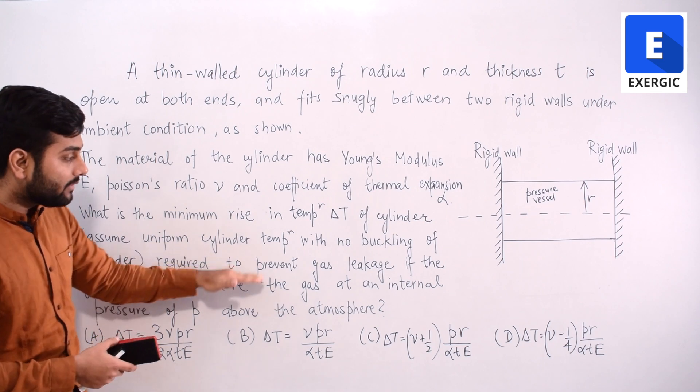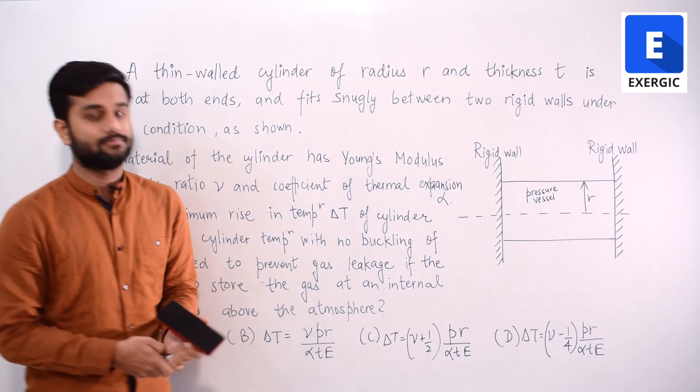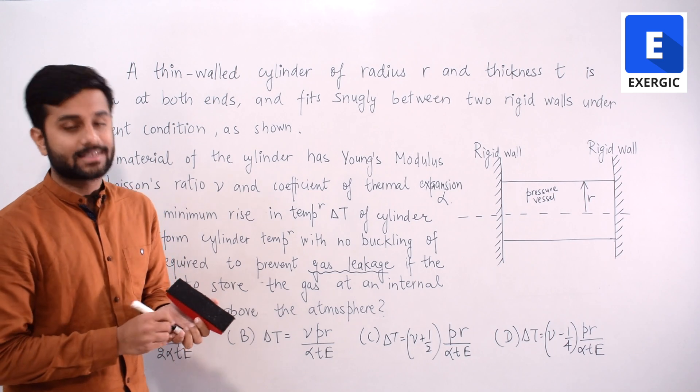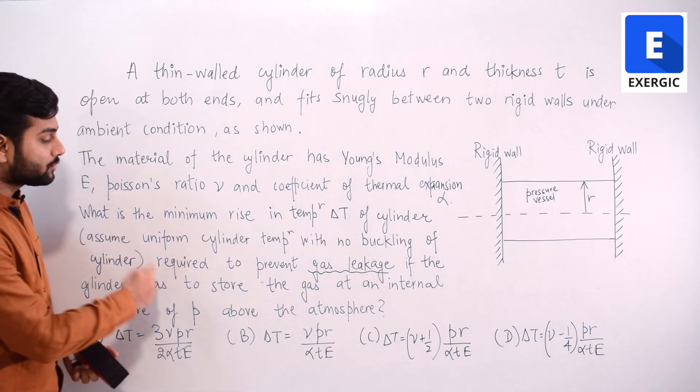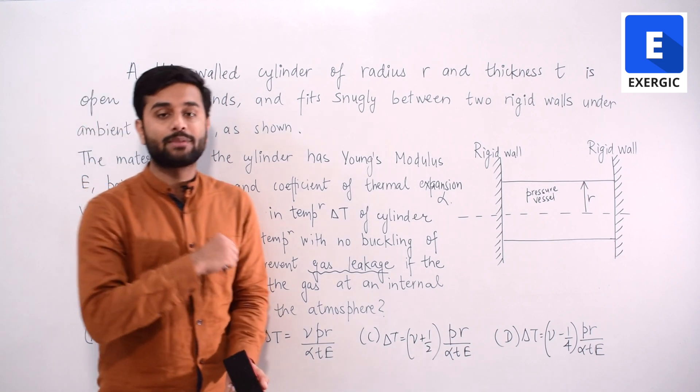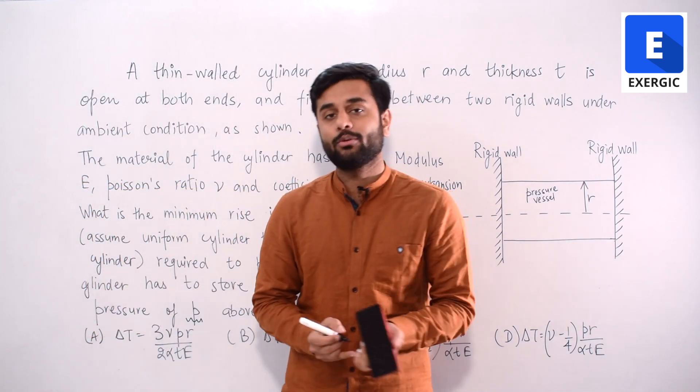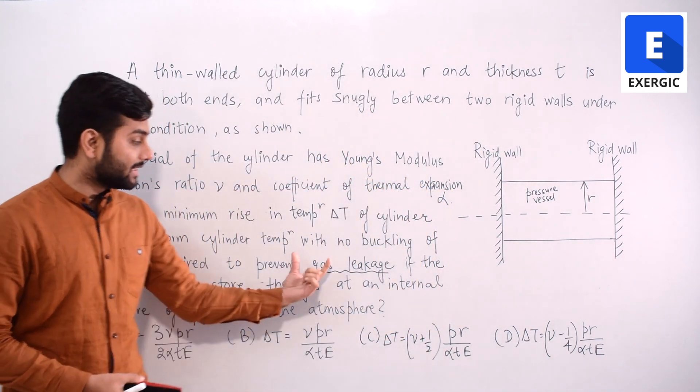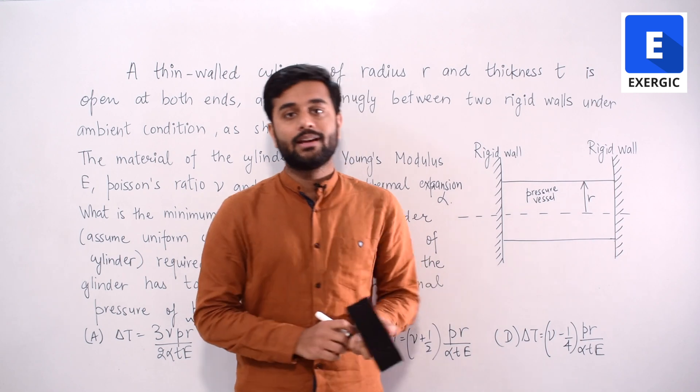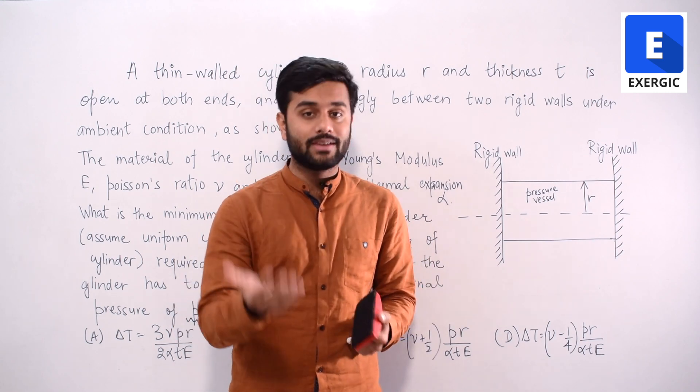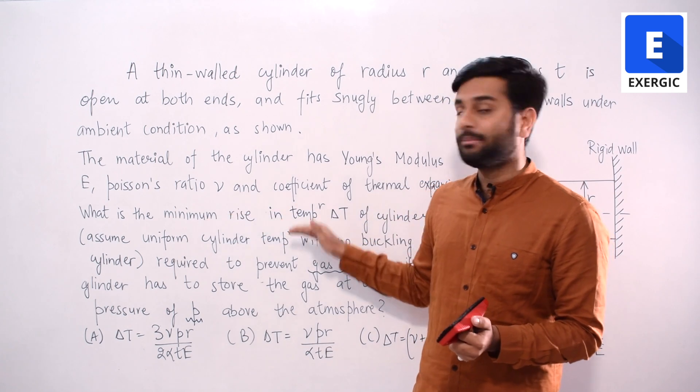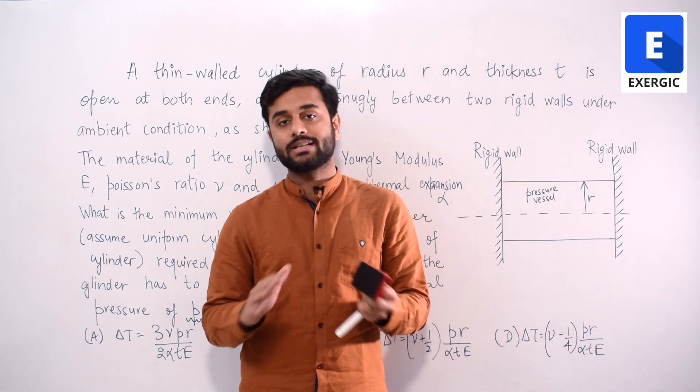Now, the rise in temperature required to prevent gas leakage. This is something you have to think - from what manner gas can leak. If cylinder has to store the gas at an internal pressure of P above the atmosphere, P is going to be the pressure above atmosphere. This will help us in using the formula of thin cylinder that we know. Coming to the discussion of this keyword gas leakage, how can gas leak when you increase the temperature? Let's understand first and then we have to calculate how much temperature we can increase by heating it up such that there is no gas leakage. What is the minimum rise in temperature that will prevent gas leakage, that will not cause any gas leakage.